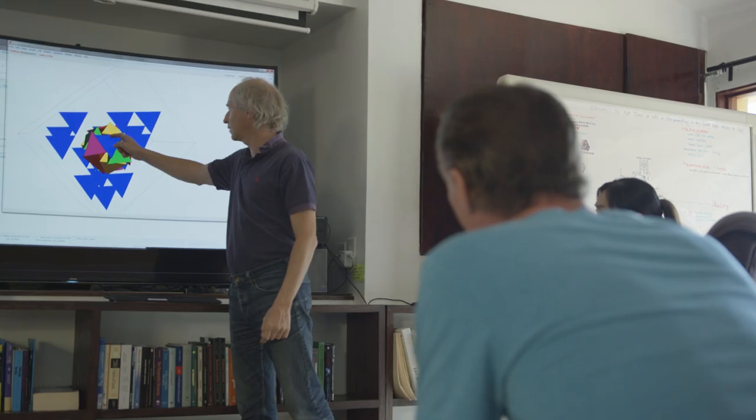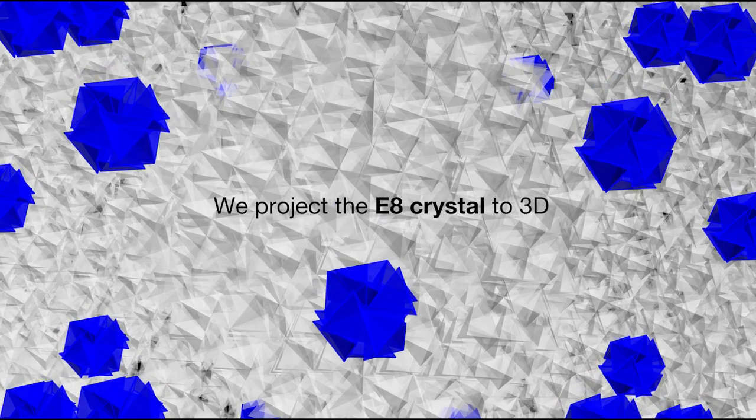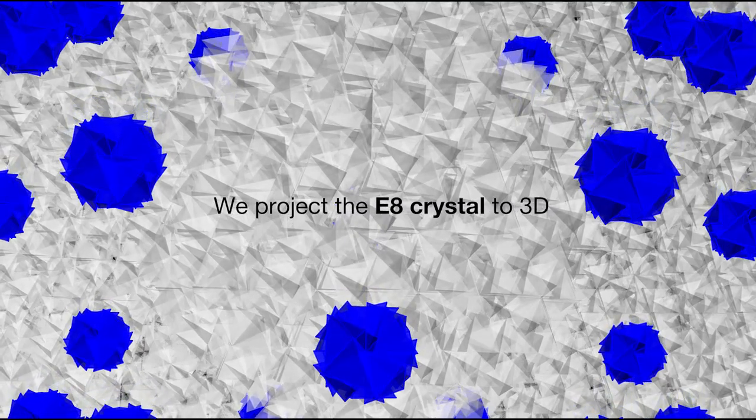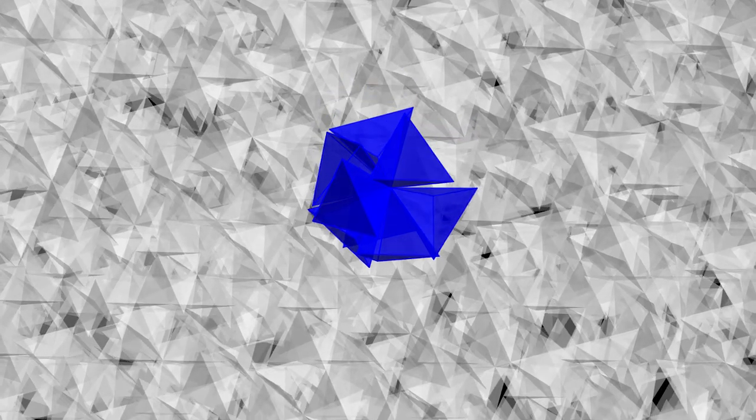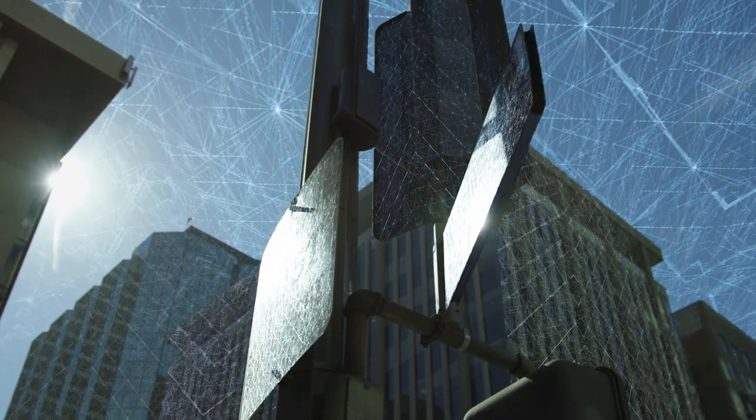We project a slice of E8 crystal down to 3D, which produces a quasi-crystal code or language. That allows these geometric symbols to build up to the ordinary world of particles and forces that we see around us. Our program is to model physics with a quasi-crystal code made of the simplest bit of three-dimensional information, the regular tetrahedron.